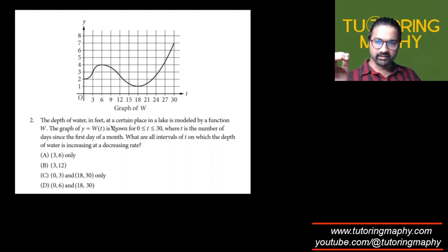This is the time. They say it here: for t from 0 to 30, where t is the number of days since the first day of that month - a particular month of 30 days. So this is the third day, sixth day. These are the days, and these are the depth of the lake.